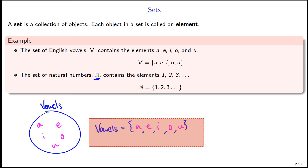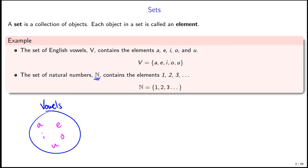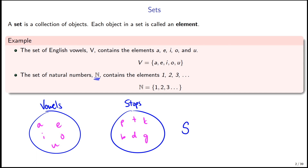Let's think in terms of phonetics. Let's say we want to talk about all the different stops in English. We have P, T, K, B, D, and G. We could represent this by saying let's call this S for stops, and this would equal the set containing P, T, K, B, D, and G. Order doesn't matter. You can see how in phonology, a natural class is just a set — this set is just the natural class of stops in English, represented with mathematical notation.